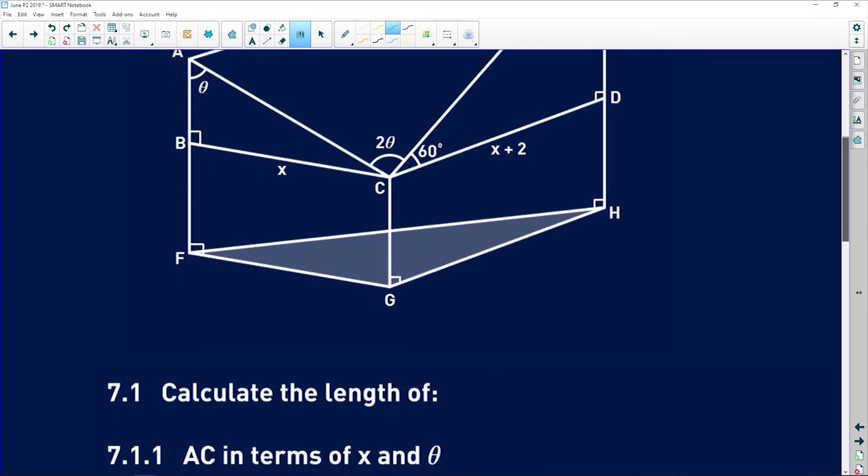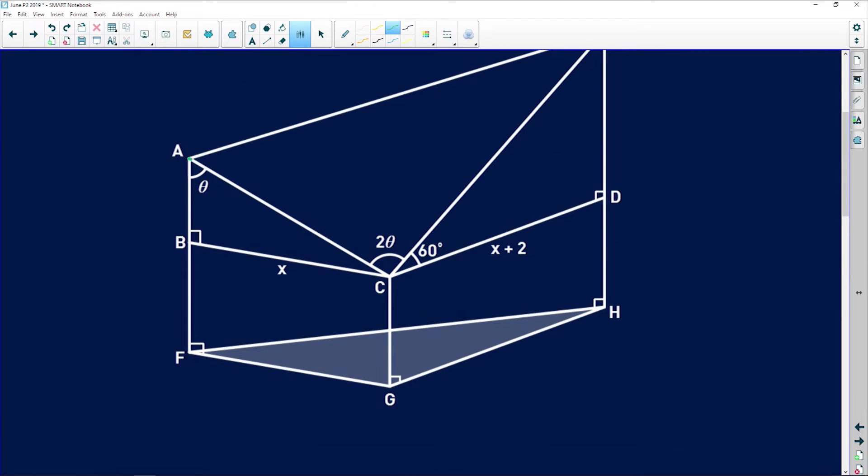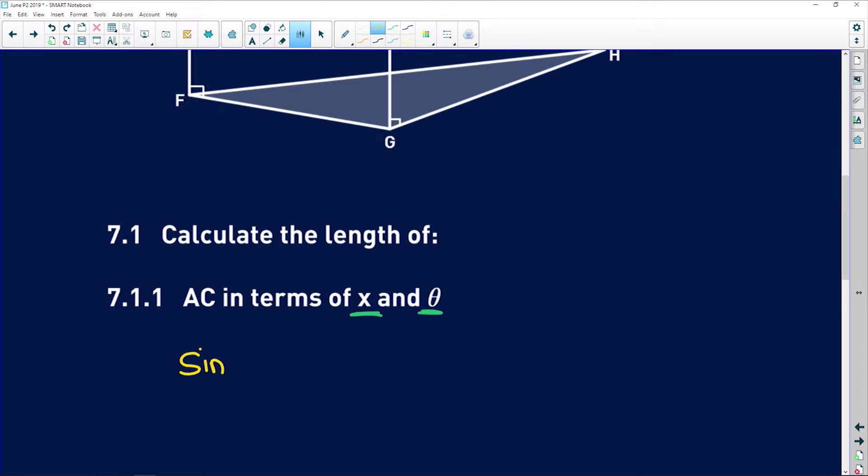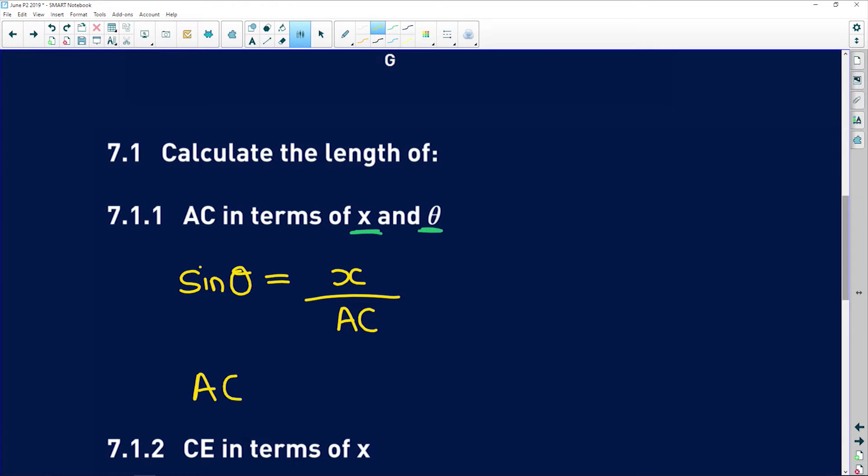Okay, so 7.1 says calculate the length of AC in terms of x and θ. So basically, the only variables you can have in your expression are x and θ. So where is AC? This is AC over here. So if we look over here, we've got the angle θ, and we've got x opposite the angle θ, and AC as the hypotenuse. So we've got a hypotenuse and the opposite. Which ratio involves opposite and hypotenuse? It's sine. So sine of θ is equal to that opposite side, which was x, over AC, which is the hypotenuse. So now you isolate AC, and we get that AC is equal to x divided by sine of θ, and you see that our answer only involves x and θ, which is exactly what we're asked for.